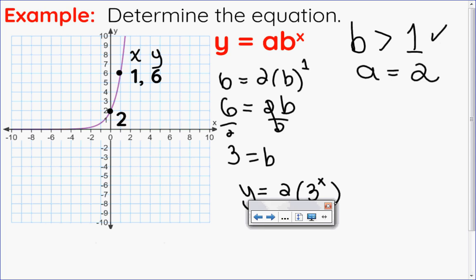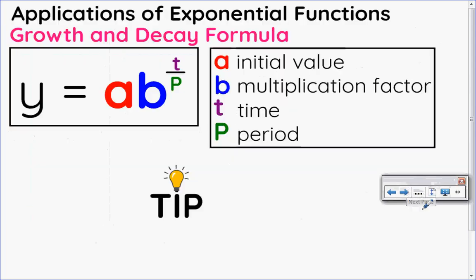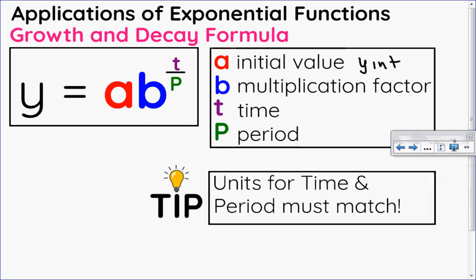Now let's take y equals a times b to the x and look at it as it applies to word problems. This is on your formula sheet and is used for growth and decay. The formula is y equals a times b to the t over p. A is still your initial value and y-intercept; b is your base or multiplication factor; t is time; p is period — the time it takes to go through one cycle. Your units for time and period must always match.